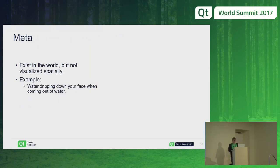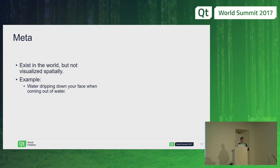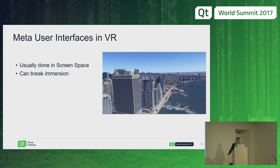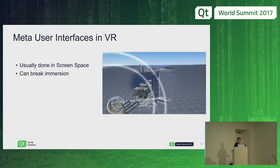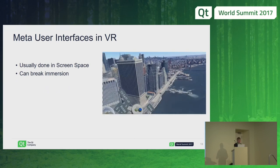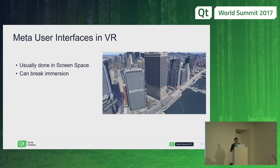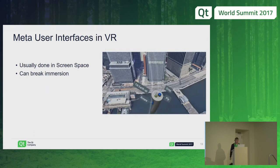The last type is the meta category — things that exist in the world but aren't visualized spatially. A game example: transitioning from underwater to above water with water dripping down your face. In VR, a good example is Google Earth VR: when you move around, it actually shrinks your field of view. It's more of a comfort thing, but tricky in VR because it breaks immersion.